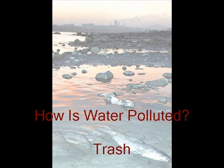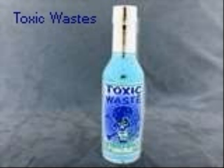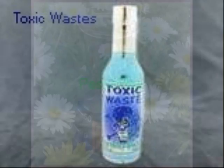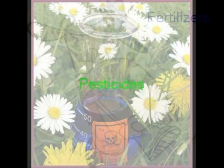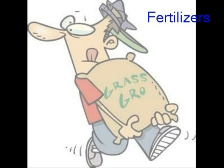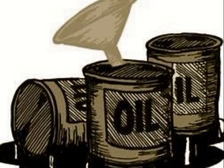How does water get polluted? People throw trash in the water, and toxic waste too. Pesticides are good for farmers' crops but not good for us, because pesticides may make us sick. Fertilizers are good for farmers' crops but not good for the fish, because fertilizer stops oxygen in the water. Oil is also a problem because oil might spill in the water.